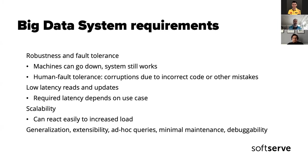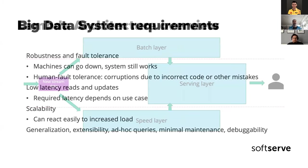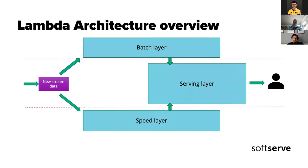And that's how Lambda Architecture came to be. It assumes that we have some source of data — some stream of events — that is being delivered to the system and which we need to process and react to.